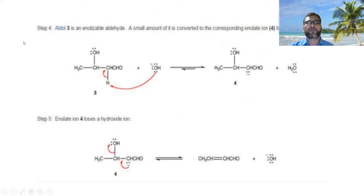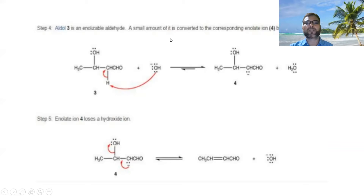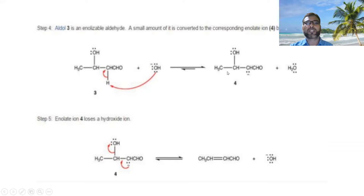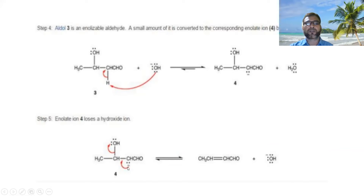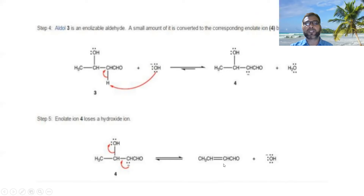In step four, the aldol product is an enolizable aldehyde. A small amount of it is converted to the corresponding enolate ion by the hydroxide ion. You can see the OH minus removes a hydrogen, forming an anion. Then in step five, the enolate ion loses a hydroxide ion — the electrons shift, and the hydroxide ion is eliminated, forming the alpha-beta unsaturated aldehyde.